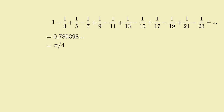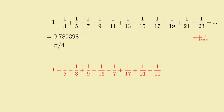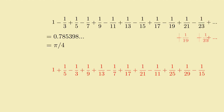Now let's rearrange these terms a little bit to make a different-looking infinite series. Take the first two positive terms, 1 and 1/5th, and then put the first negative term, negative 1/3rd, after them. Then tack on the next two positive terms, 1/9th and 1/13th, and follow them both with the next negative term, negative 1/7th. And keep going, always adding the next two positive terms followed by the next single negative term, in the pattern plus plus minus, plus plus minus, and so on.